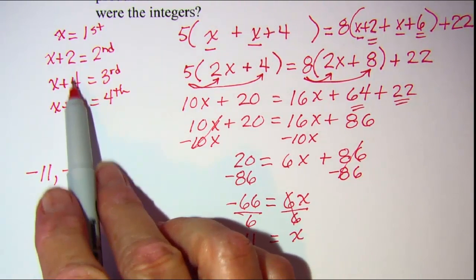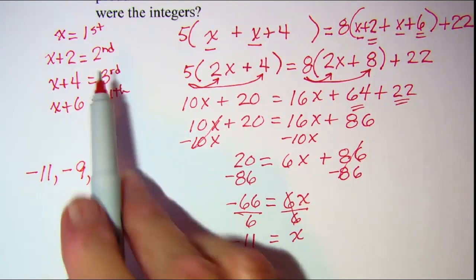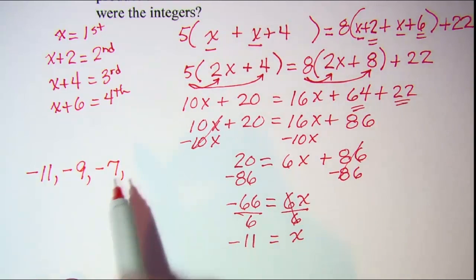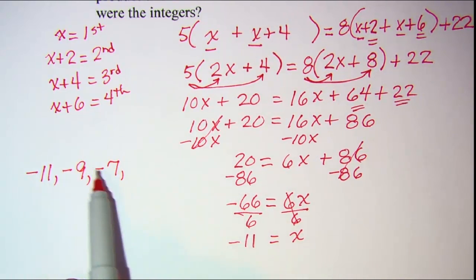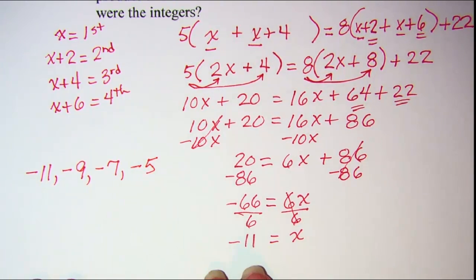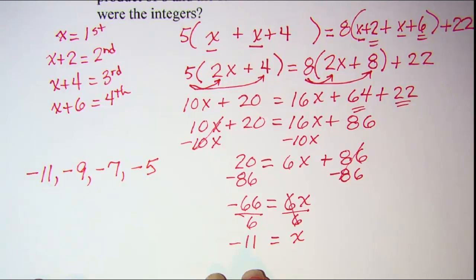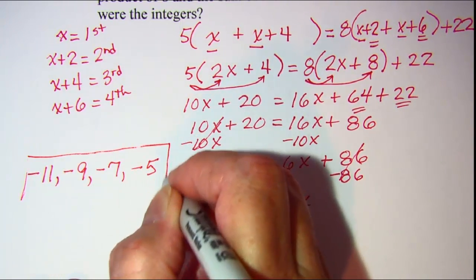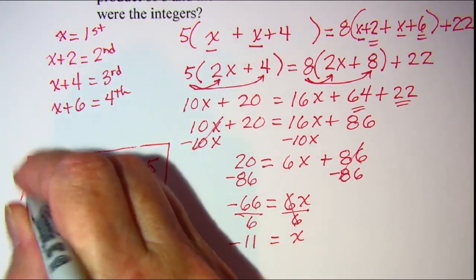Add 2 more to get my third integer. That will give me a negative 7. And then add 2 more to get my fourth integer. That will be a negative 5.